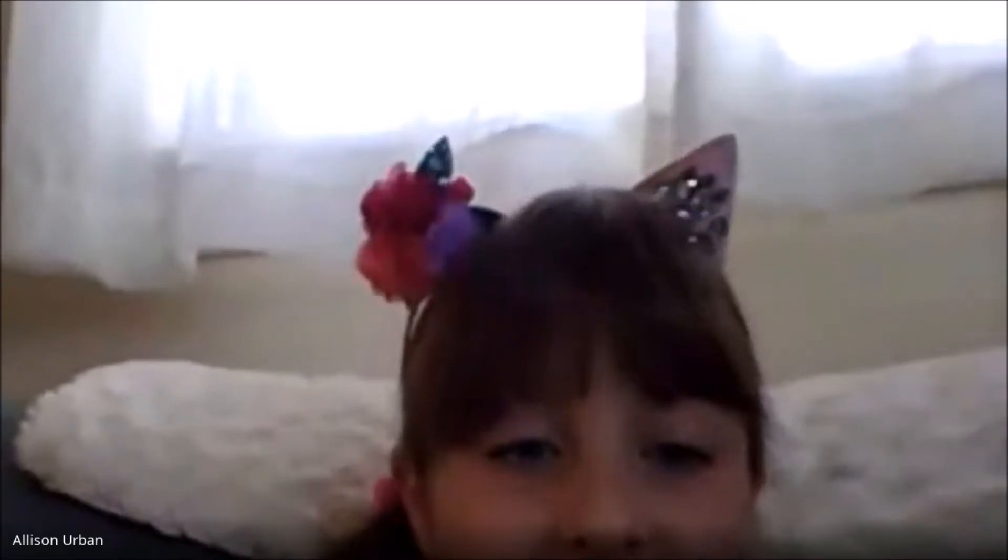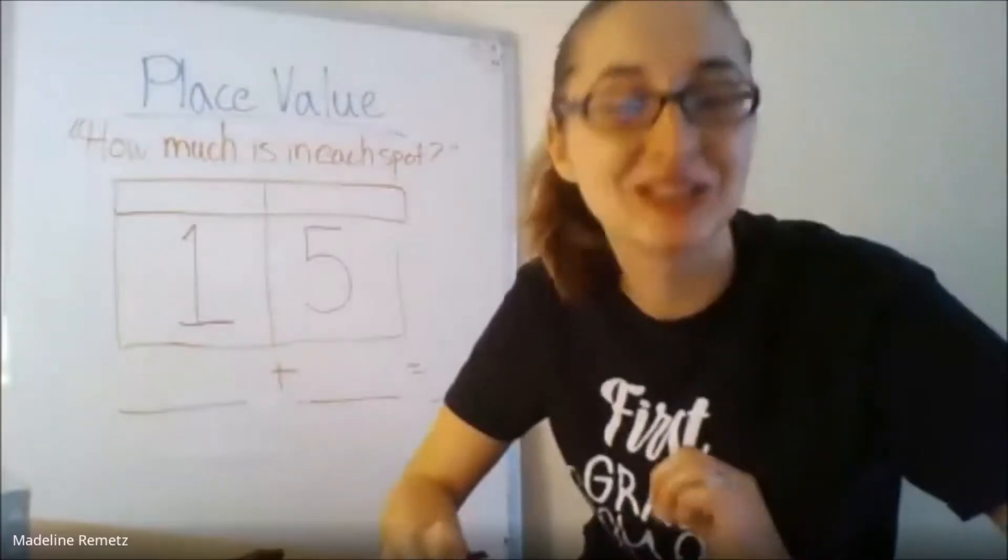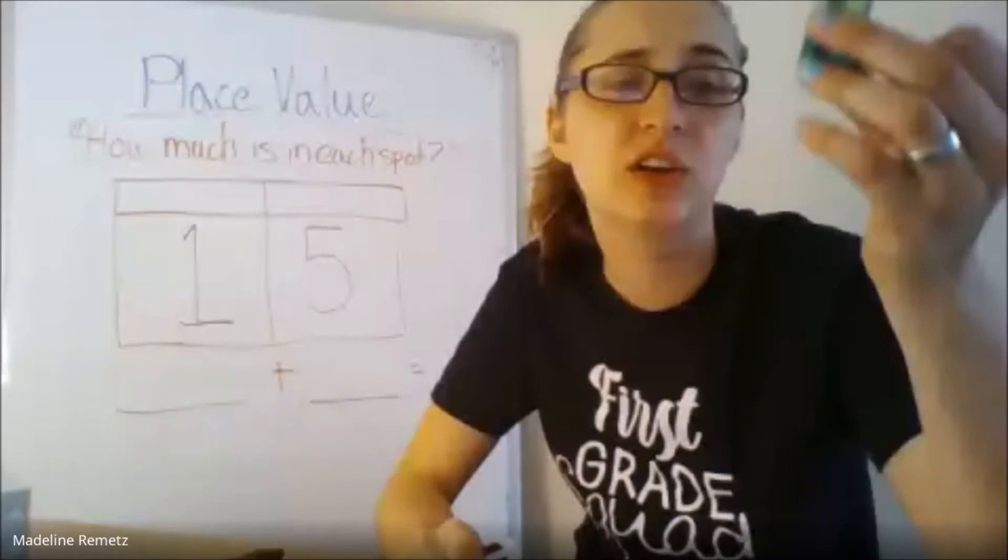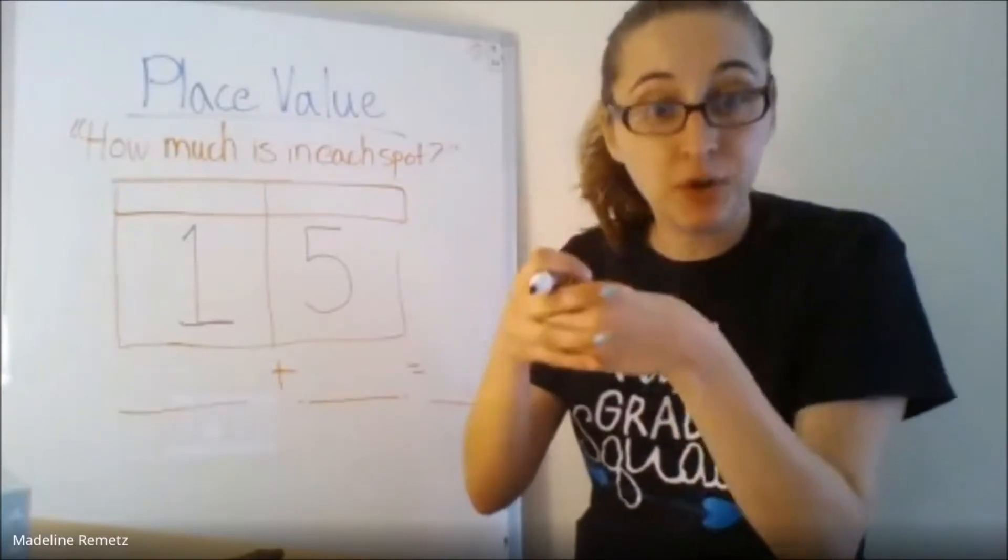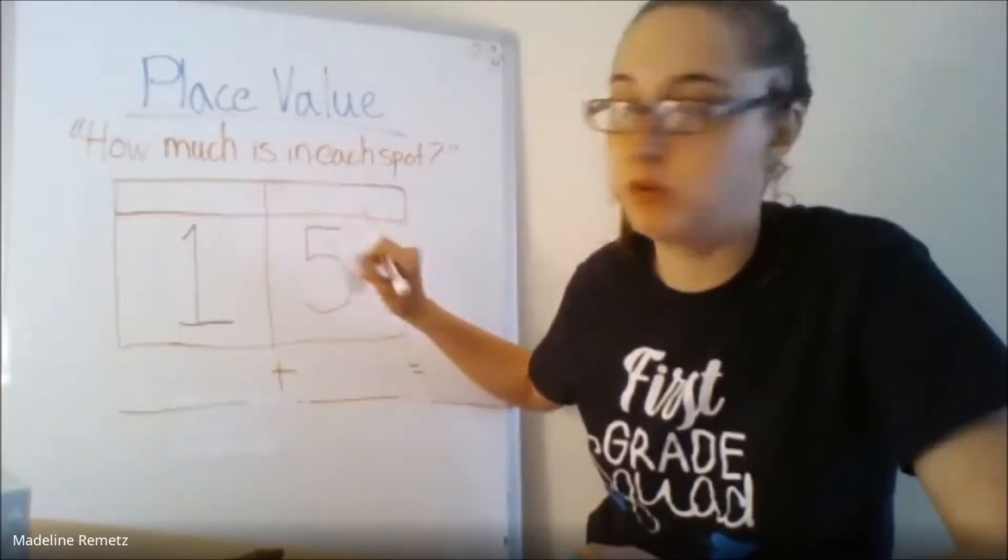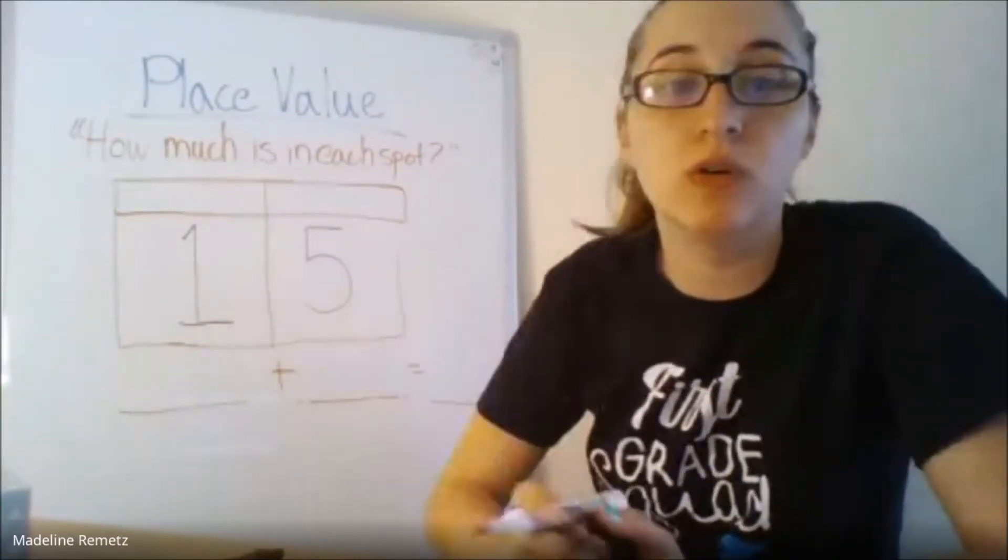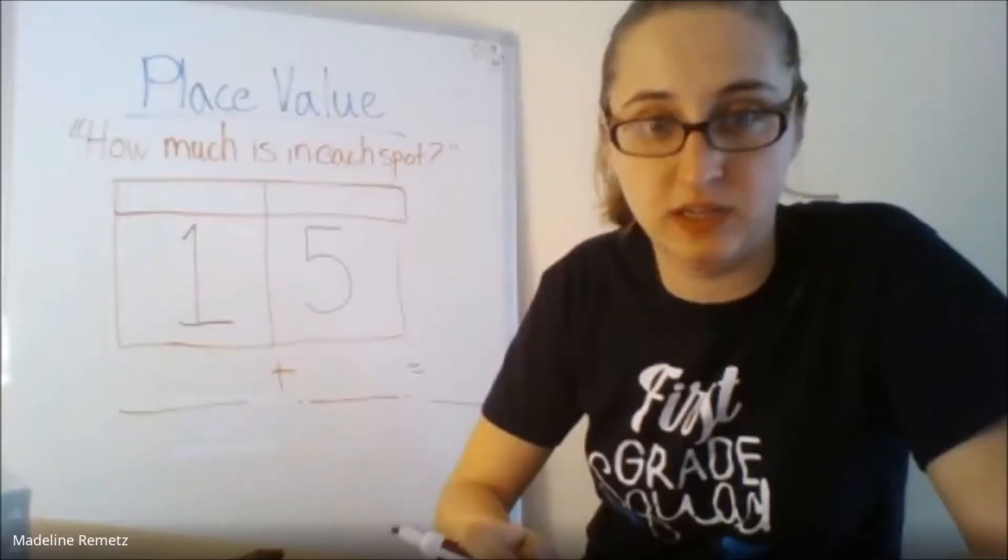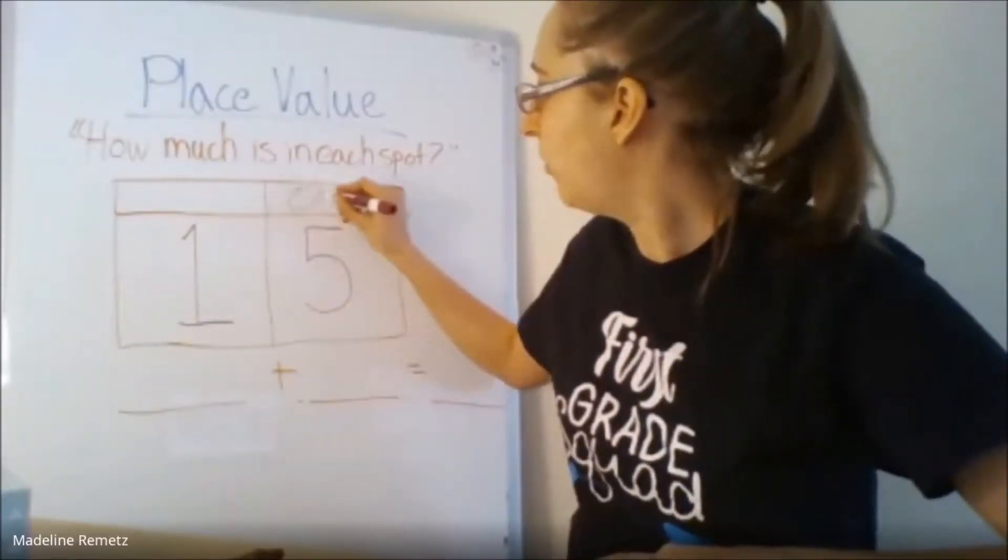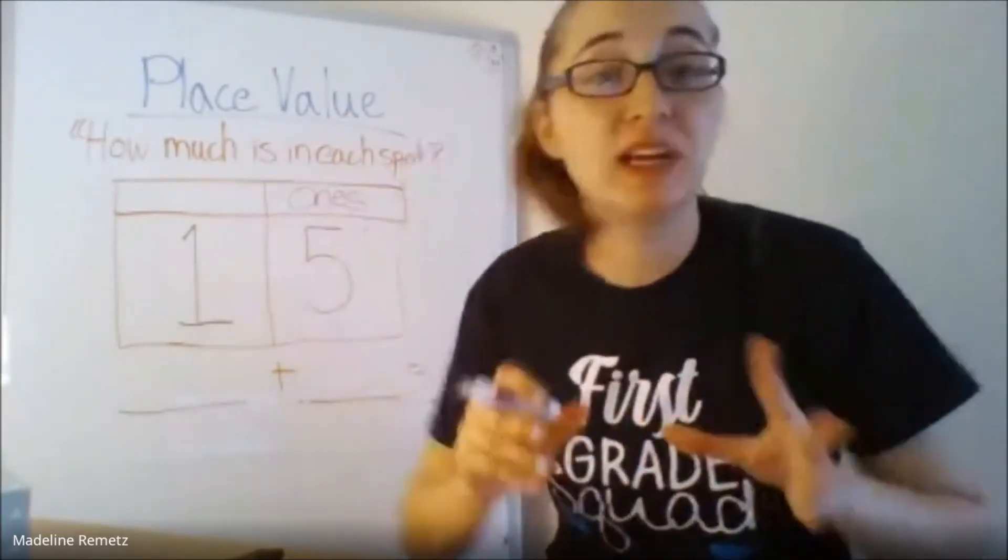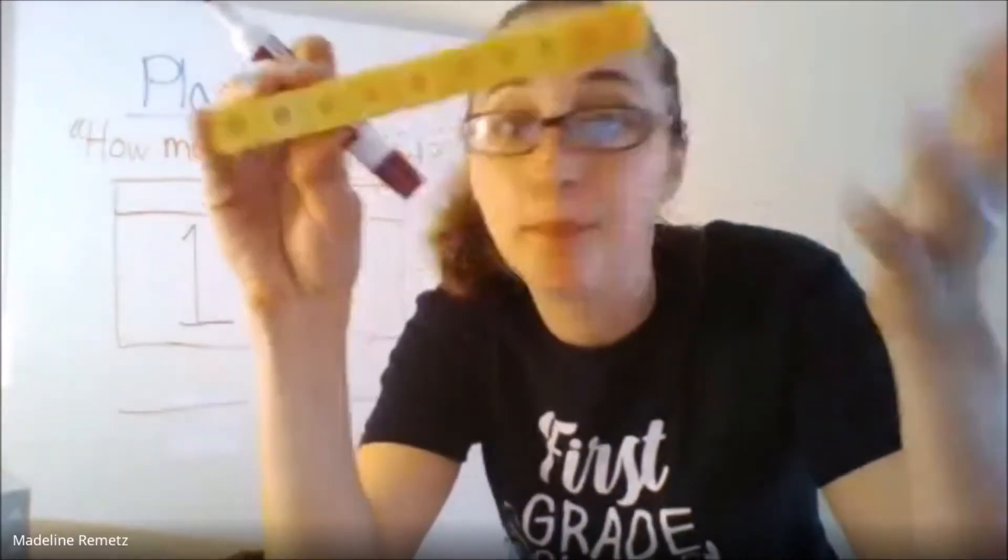Five lonely sticks. It could be lonely sticks, it could be lonely cubes. But is this 5 big enough to become a bundle? No. So these are 5 what? What would be the name of this place value spot? Anyone know? I'm going to have Allison answer, but see if you can answer with her. One's. One's. Awesome job! These are the one's. That's because they're not big enough to make what's called a strip, a bundle, or a 10.